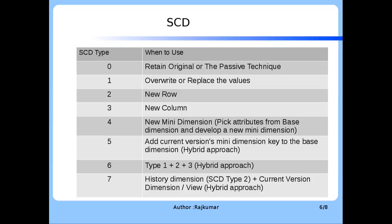SCD Type 2 deals with adding new rows to the dimension table. SCD Type 3 is about adding new columns to the dimension table. SCD Type 4 is about adding a new mini dimension — picking some attributes from the base dimension and developing a new mini dimension. The surrogate keys from both the base dimension and the mini dimension will be available in the fact table as part of this design implementation.